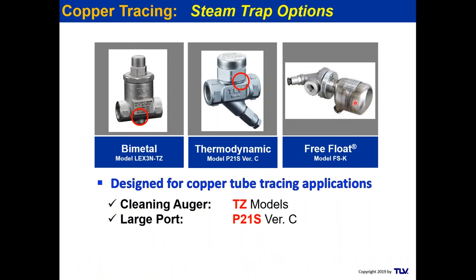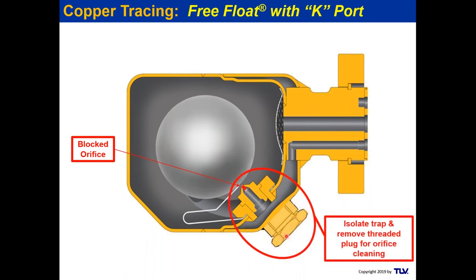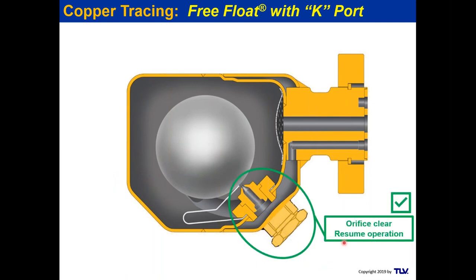For critical heating processes requiring near-steam-temperature discharge, a free float mechanical steam trap with a K4 clean-out port is available. The K port — located at the back of the trap at the orifice — can be threaded out to provide access. A welding rod or clean-out rod can then clear blocked debris, restoring a clear flow path and resuming normal reliable operation without full trap replacement.